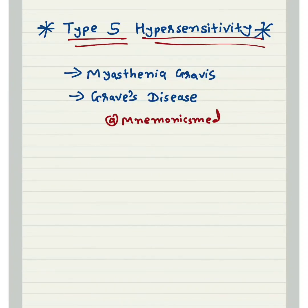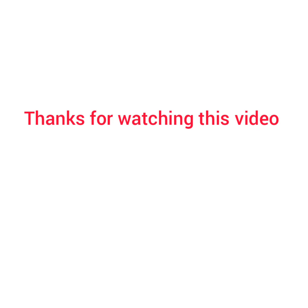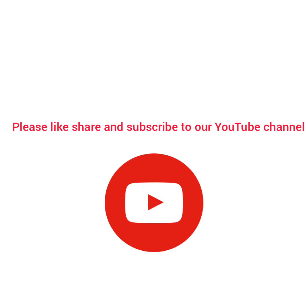Now we will learn about Type 5 hypersensitivity reaction. There are only two examples: myasthenia gravis and Graves disease. You have to remember only these two diseases. Thanks for watching this video — please like, share, and subscribe to our YouTube channel.